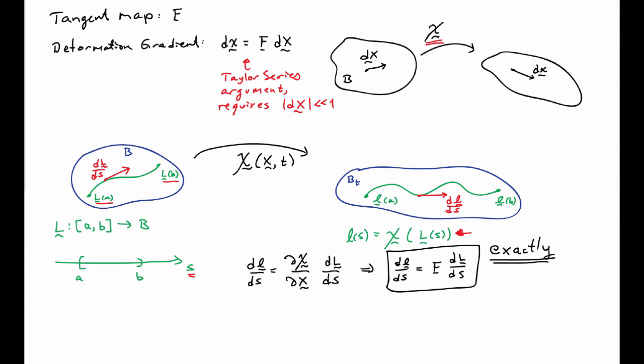The gradient of the deformation map is the deformation gradient, which we call F. So I have d little L dS equals F d capital L dS. That's an exact relationship. F as a tensor exactly maps the tangent vectors from the reference configuration to the tangent vectors in the current configuration.